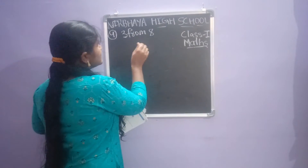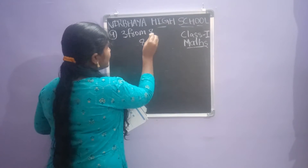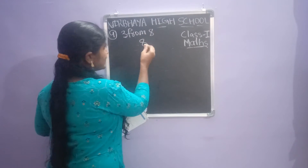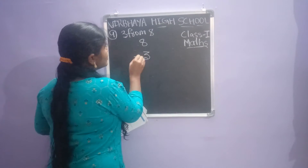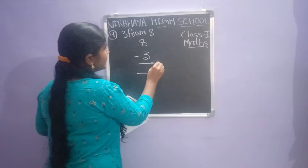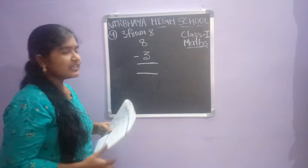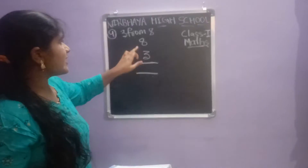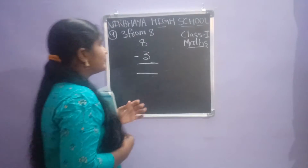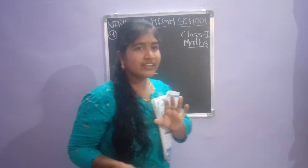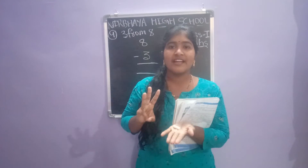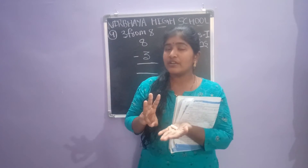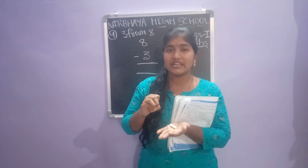We are writing the small number below the big number. Here the big number is 8 and the small number is 3. So 8 minus 3. I will help you — open 8 fingers children. 8 fingers means remove 3 fingers: 1, 2, 3.